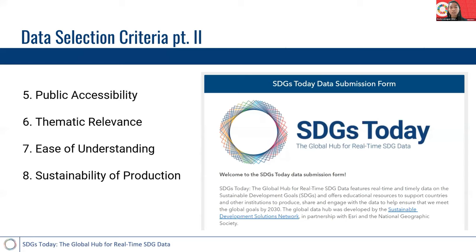Next, we look at thematic relevance — we want to make sure that the datasets we feature are relevant to one or more of the SDGs. We also look at ease of understanding. We don't assume that all users are GIS experts or experts on a particular dataset, so we want to make sure datasets are clear and communicable to all users on our platform. Finally, we look at the sustainability of production. Because this project supports the SDGs, we want to make sure that datasets we feature will be available and updated through 2030.